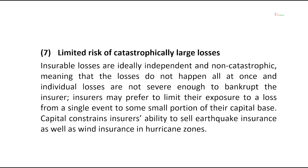Seventh characteristic is limited risk of catastrophically large losses. Insurance losses are ideally independent and non-catastrophic, meaning that the losses do not happen all at once and individual losses are not severe enough to bankrupt the insurer. Insurers may prefer to limit their exposure to a loss from a single event to some small portion of their capital base, which constrains their liability to sell earthquake insurance as well as wind insurance in hurricane zones.